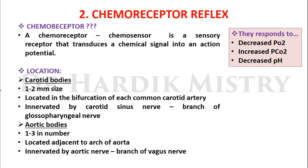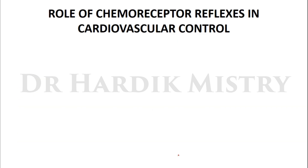Chemoreceptor reflex: a chemoreceptor is a sensory receptor that transduces a chemical signal into an action potential. They respond to decreased partial pressure of oxygen, increased partial pressure of carbon dioxide, and decreased pH. Chemoreceptors are located in the carotid bodies and aortic bodies. Carotid bodies are 1–2 mm in size, located at the bifurcation of each common carotid artery, and innervated by the carotid sinus nerve (branch of glossopharyngeal nerve). Aortic bodies, 1–3 in number, are located adjacent to the arch of aorta and innervated by the aortic nerve (branch of vagus nerve).